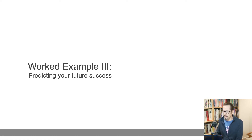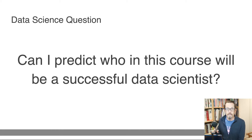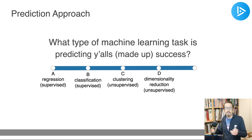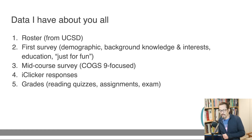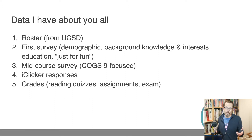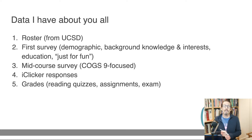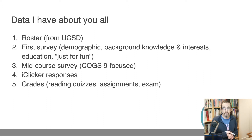Let's do a different worked example. Can we predict who in this course will be a successful data scientist in the future? What kind of machine learning task is this? It's still supervised classification. To predict success we need a bunch of input features: things like names and survey information, demographic knowledge, background interests, skill sets coming into the course, iClicker responses, and grades.